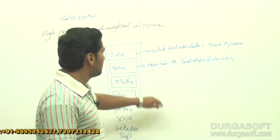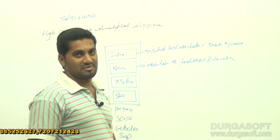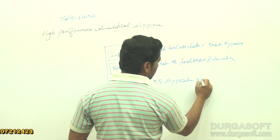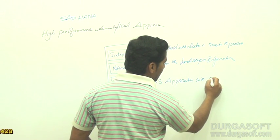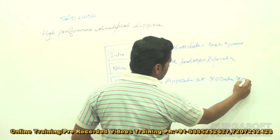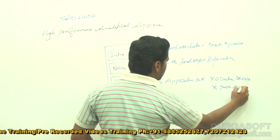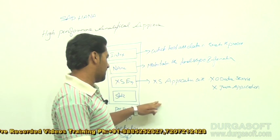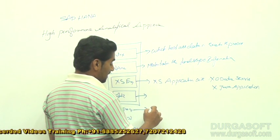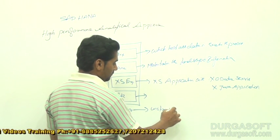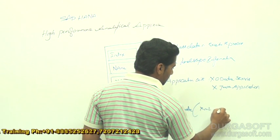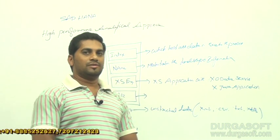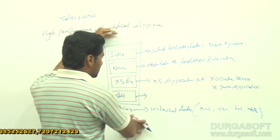The name server maintains the landscape information of the SAP system. The access engine plays the access application role with XO data services and X Java application. The preprocessor maintains unstructured data, such as XML, CSV, text, or Excel files.